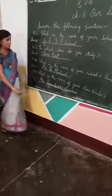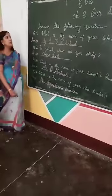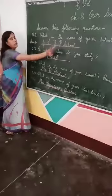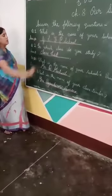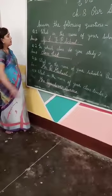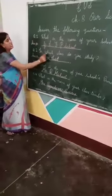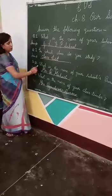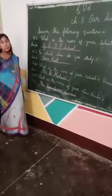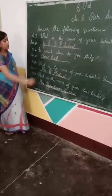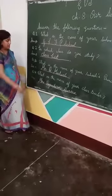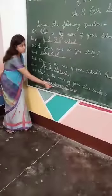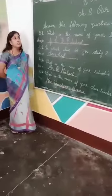Once again, I repeat for you. What is the name of your school? Genius Little Clark Public School — GLFP school, full name bologe. In which class do you study? Class first. What is the name of your school's principal? Mr. R. Michael. What is the name of your class teacher? Mrs. Rajeshwari Sharma. Clear students?